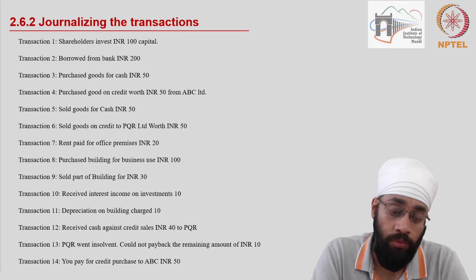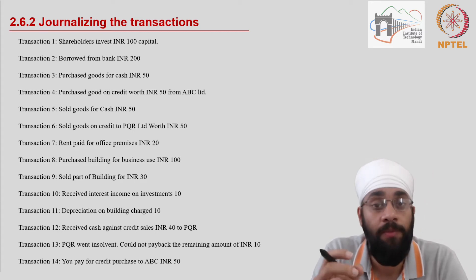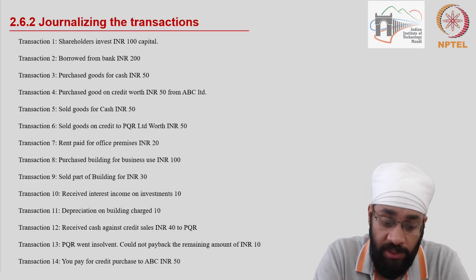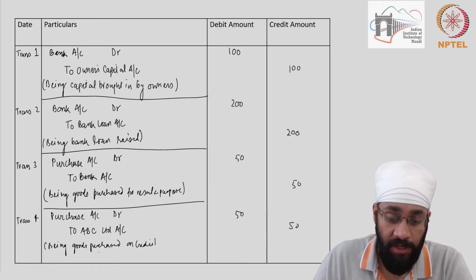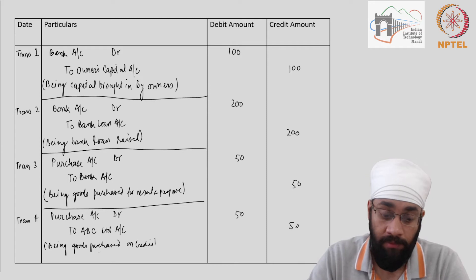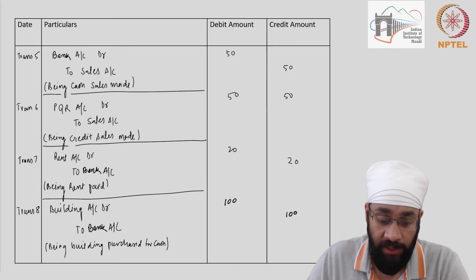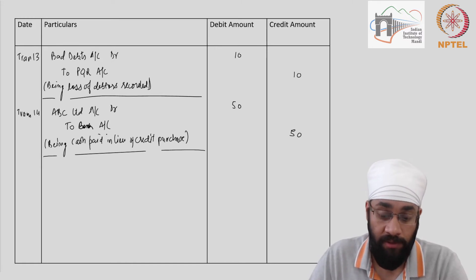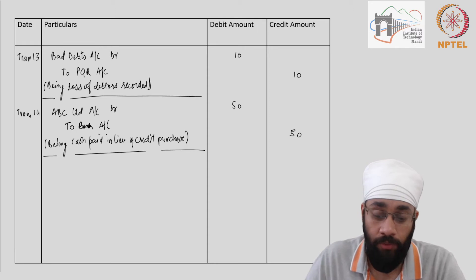You learned how to write these transactions in the book of first entry, how to journalize these transactions, and then as a result we prepared a journal which looked like this and you have the 14 transactions written in a visible manner in a summary form.